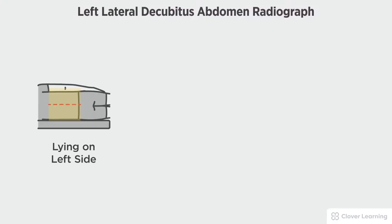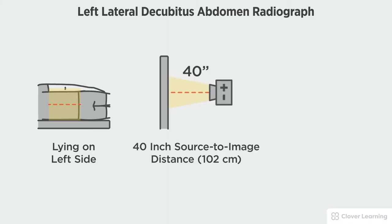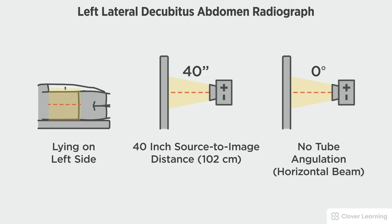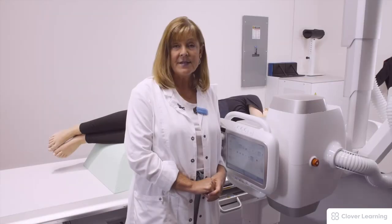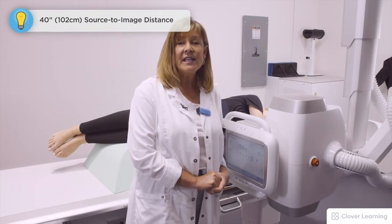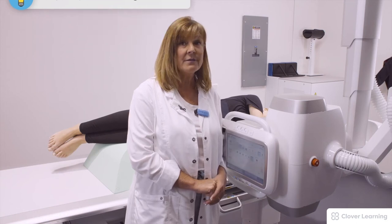In this view we will be demonstrating the left lateral decubitus abdomen. The left lateral decubitus abdomen should be performed with the patient lying with their left side down, a 40-inch source to image distance, and a horizontal beam with no tube angulation. This is done for air-fluid levels. The patient needs to be a minimum of five minutes in this position, though 10 to 20 minutes is preferred.